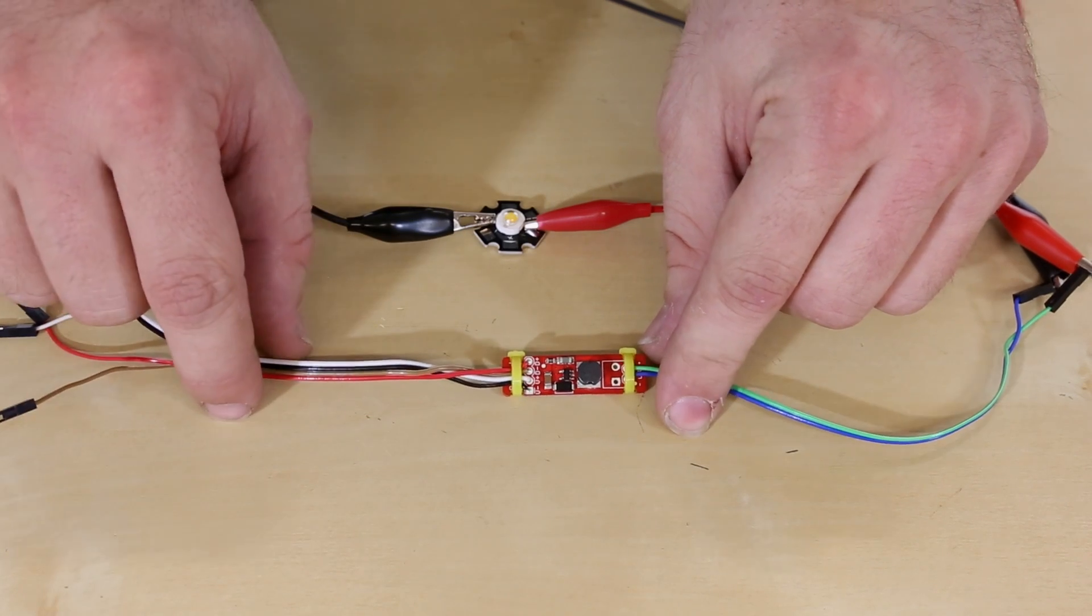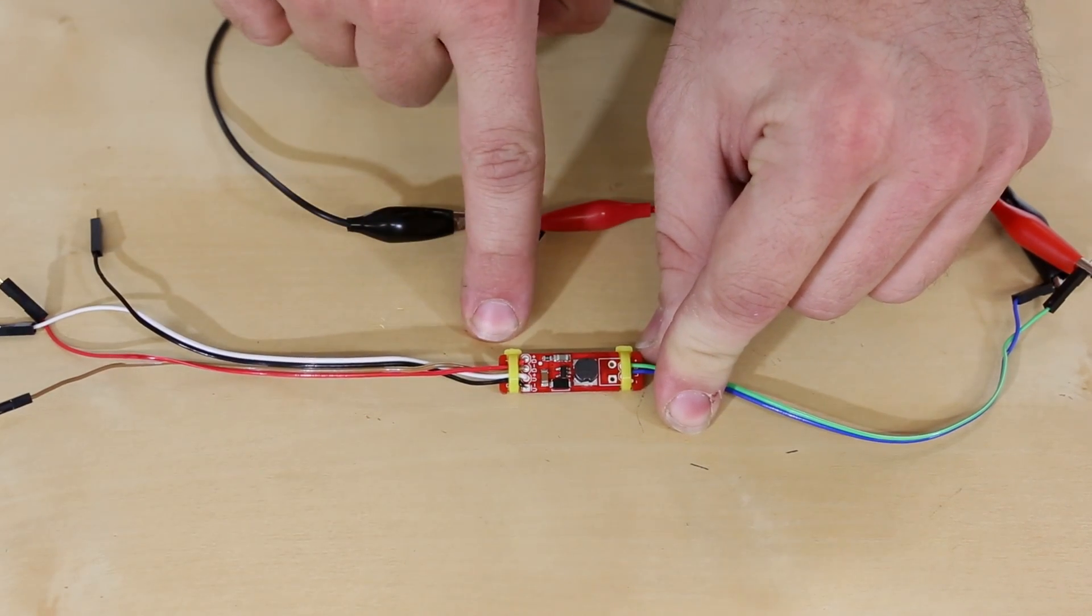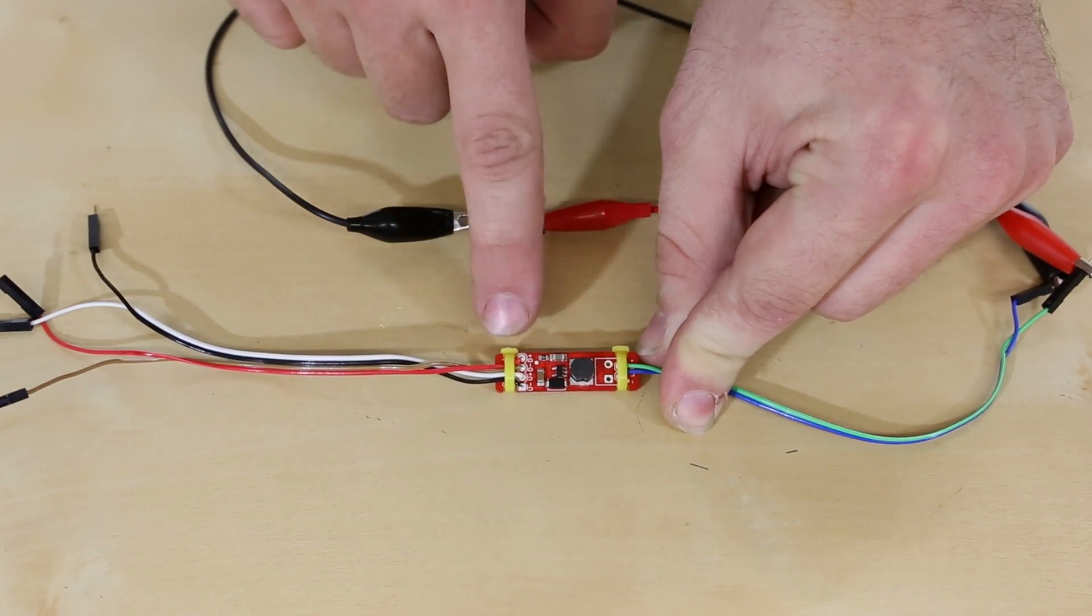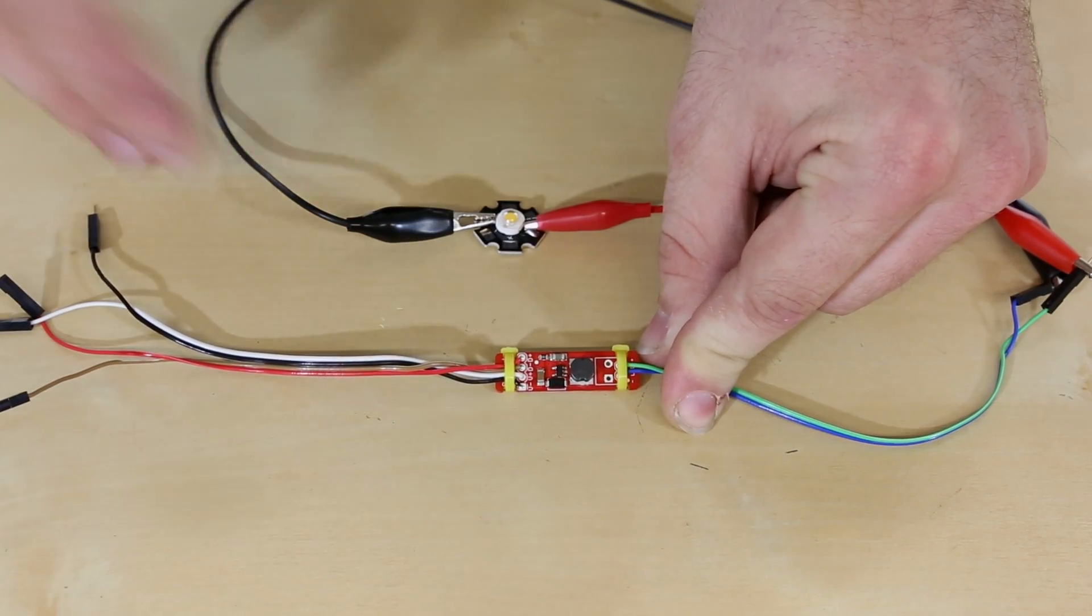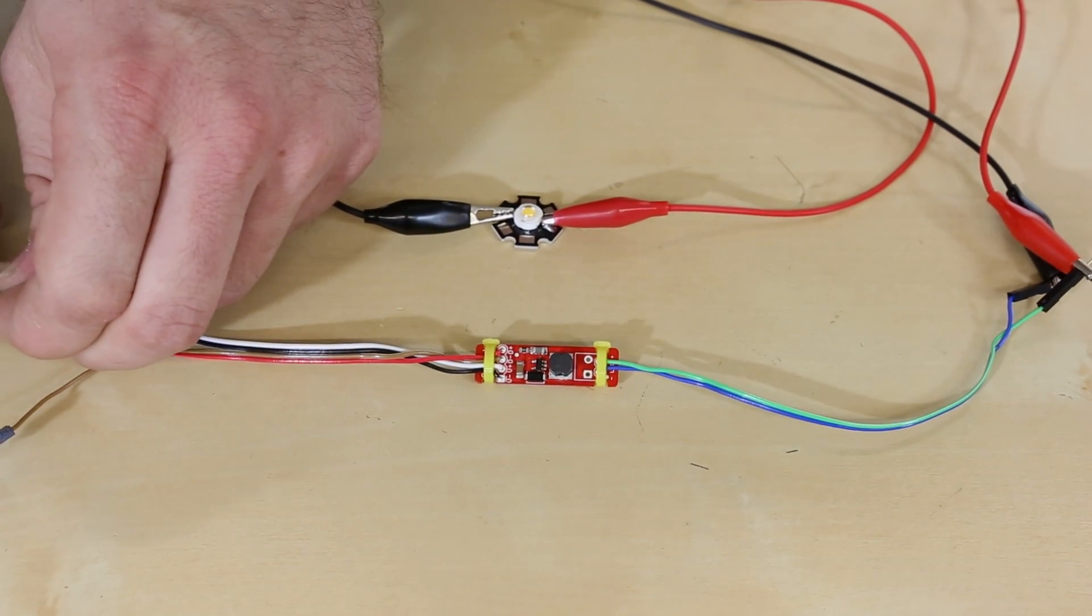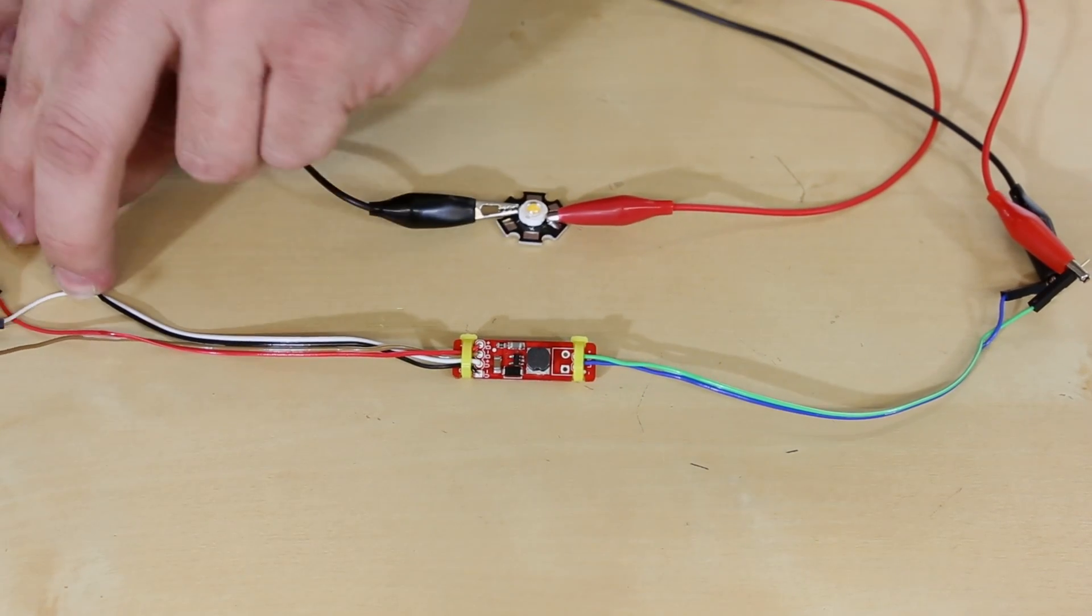And then I'm going to connect the power supply to this side of the FemtoBuck. Now you need to supply at least 7 volts to this side in order for it to work. Anything below that and it just simply won't light up the LED. So I'm going to connect again using alligator clips on this side.